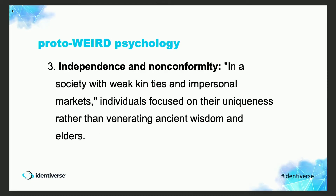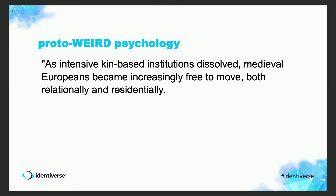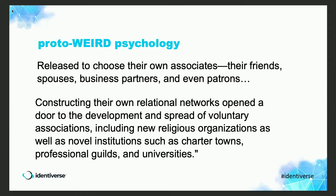Lawyers and theologians began to imagine that people have rights. Independence and nonconformity emerged — in a society with weak kin ties and impersonal markets, individuals focused on their uniqueness rather than venerating ancient wisdom and elders. And finally, impersonal pro-sociality: with life governed by impersonal norms for dealing with strangers, people came to prefer impartial laws applying to their groups, cities, guilds, and monasteries, independent of older social relationships, tribal identity, or social class. Medieval Europeans became increasingly free to move — relationally and residentially — and to choose their own associates, friends, spouses, business partners, and patrons.